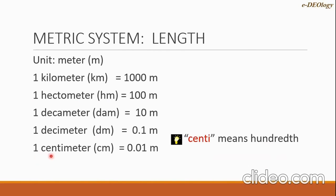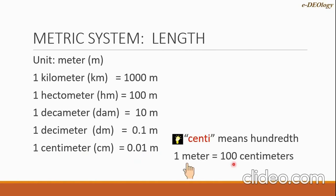The next is centimeter, with symbol cm. One centimeter equals 0.01 meter, which we read as one hundredth. Note that 'centi' means hundredth. Another way to write this is: one meter equals 100 centimeters.